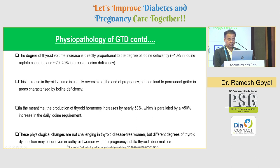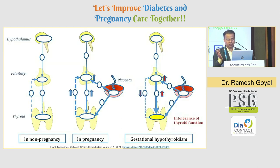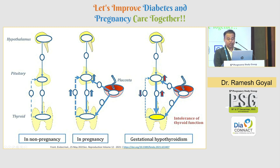These physiological changes are not challenging in thyroid disease-free women, but different degrees of thyroid dysfunction may occur even in euthyroid women with pre-pregnancy subtle thyroid abnormalities. In the non-pregnant state, the classic hypothalamo-pituitary-thyroid axis operates with negative feedback from thyroid to pituitary. In normal, uneventful pregnancy, the placenta intervenes in this axis but does not disturb it. However, if the placenta malfunctions — since it acts as an endocrine organ during pregnancy — and if there is increased deiodination activity, it can disturb the hypothalamo-pituitary axis and lead to gestational hypothyroidism.